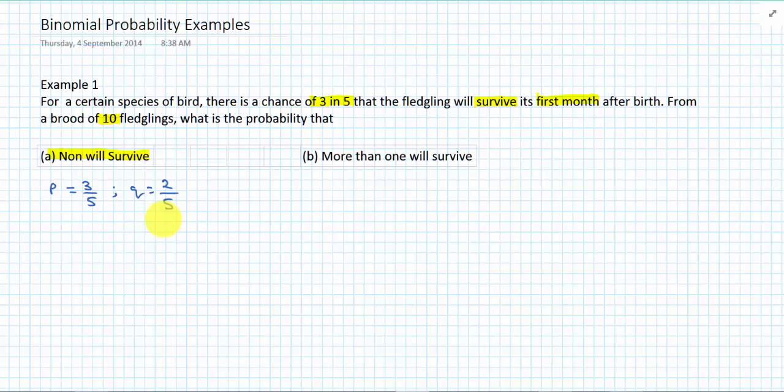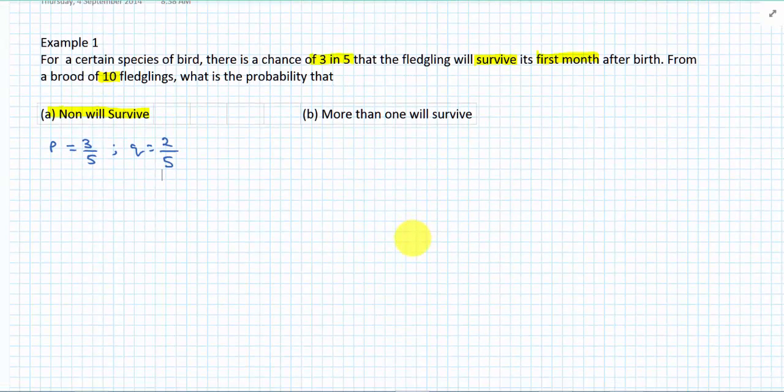Let's see if it meets all the requirements. First of all, is it exactly two outcomes? Well, we can see there is success and failure. Success is survival, and failure is non-survival. So P being our success is three on five, and Q being our failure of not surviving is two on five. The next thing is, does the probability change?